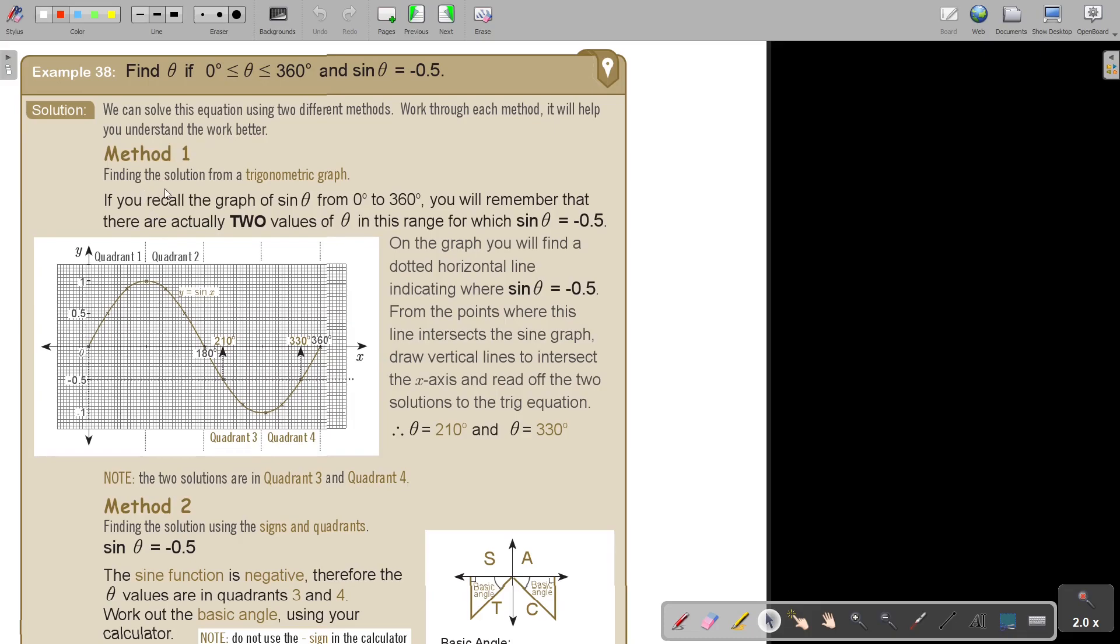Method one: finding the solution from a trigonometric graph. If you recall the graph of sin θ, it starts at zero and makes one wave with a period of 360 degrees, then it starts repeating itself.